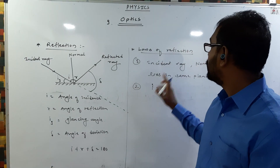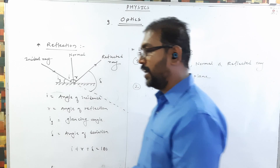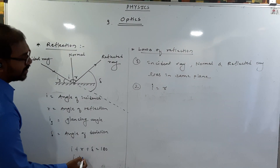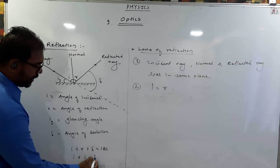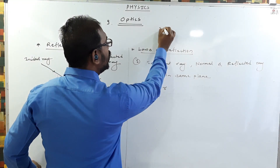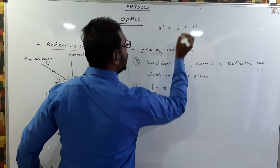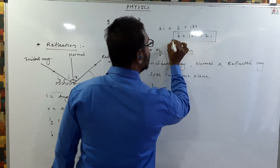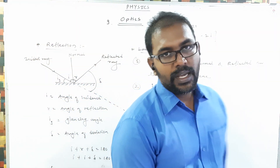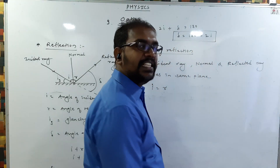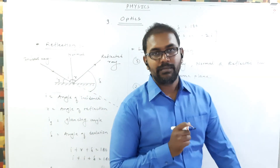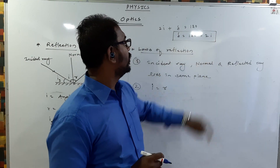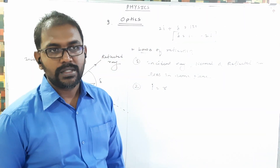Using the second law, since i equals r, we substitute into i plus r plus delta equals 180. So i plus i plus delta equals 180, which gives 2i plus delta equals 180 degrees, or delta equals 180 minus 2i. This is the expression for the angle of deviation. For example, if light is incident at 30 degrees, then delta equals 180 minus 2 times 30 equals 120 degrees.